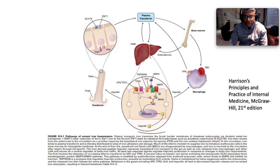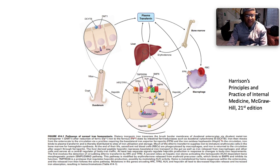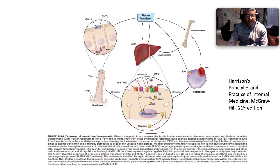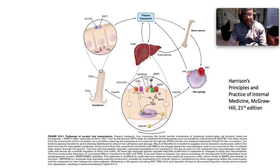Senescent red blood cells are phagocytosed by macrophages and iron is returned to circulation via ferroportin. The liver-derived peptide hepcidin represses basolateral iron transport in the gut and iron release from macrophages, serving as the central regulator of body iron traffic. At least two separate signals regulate hepcidin production: detection of circulating diaphoretic transferrin by HFE and TFR2, and a second relying on hepatic iron stores activating the hemojuvelin-dependent BMP-SMAD pathway, modified by erythroferrone released from erythroid precursors.